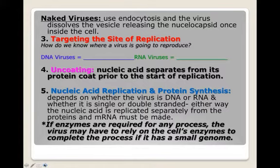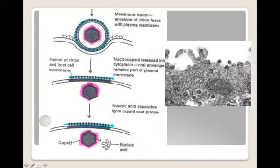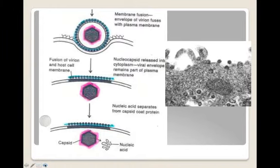Naked viruses use endocytosis only. The virus dissolves the vesicle, releasing the nucleocapsid once inside the cell. There's no envelope so it doesn't get ripped off. Now, why might fusion be disadvantageous for a virus? The virus wants to hide inside the host cell and avoid the immune system. By leaving its glycoproteins external to the cell via fusion, the immune system can detect them and identify the cell as infected. With endocytosis, there are no glycoproteins on the surface, so there's no indication a virus is inside — endocytosis is actually sneakier.